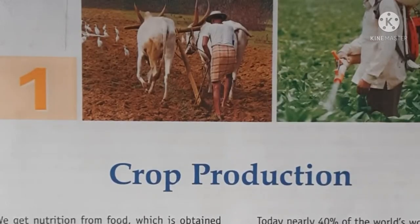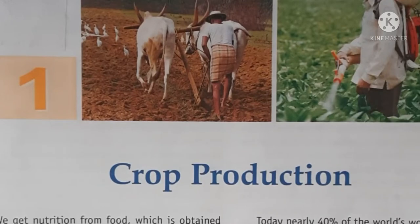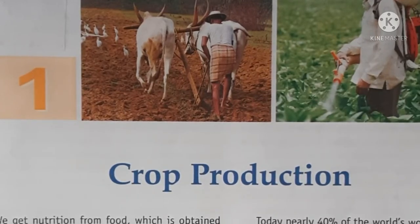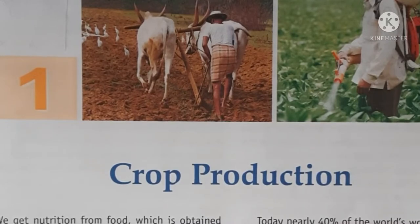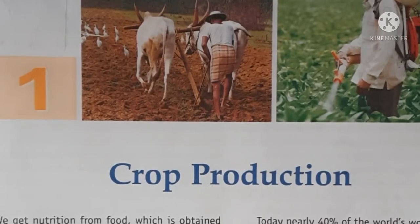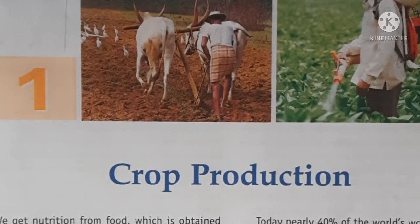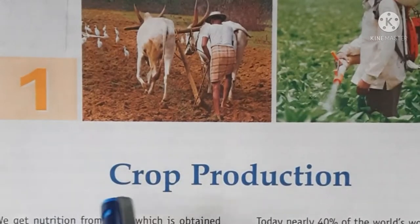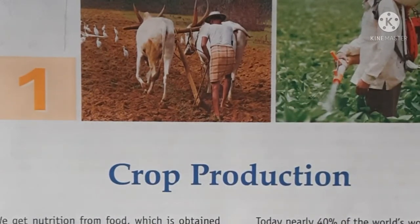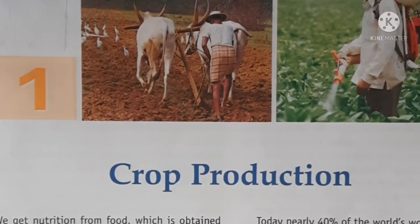Hi geniuses, welcome to the channel Science Wizard Pooja Ranjan. This channel is all about the science subject for classes 6th, 7th, 8th, 9th, and 10th — physics and chemistry. If you are new to my channel, you can subscribe for more science videos. The chapter we are going to discuss today is Class 8 Chapter 1: Crop Production. I have already made 3 videos on this chapter, and the topic we are covering today is weeding.